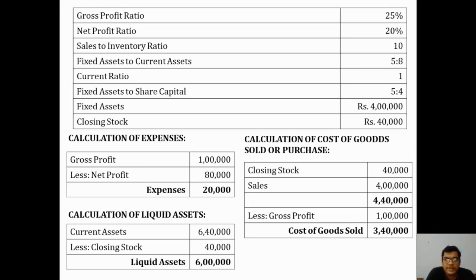Next, we calculate liquid assets. Current assets are 6,40,000 and closing stock is 40,000. The formula for liquid assets is current assets minus stock minus prepaid expenses. So liquid assets equal 6,40,000 less 40,000, giving 6,00,000. With all this information, we can now prepare the trading, profit and loss account and balance sheet.